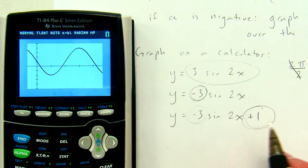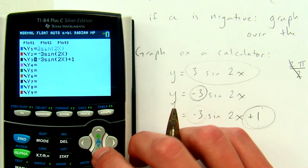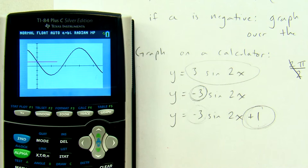What do you think the midline of this graph is? The midline is k. And so the midline is 1. Let's graph that so we can see that the middle of the graph is y equals 1.